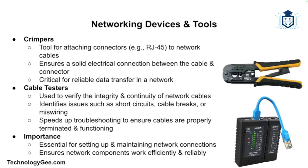Networking devices and tools are used to work with these connections. A crimper is a tool used to attach connectors such as RJ45 plugs to the ends of network cables; proper crimping ensures a solid electrical connection essential for reliable data transfer. A cable tester is used to verify the integrity and continuity of network cables, helping identify issues like short circuits, cable breaks, or miswiring. These tools are important for setting up and maintaining network connections.